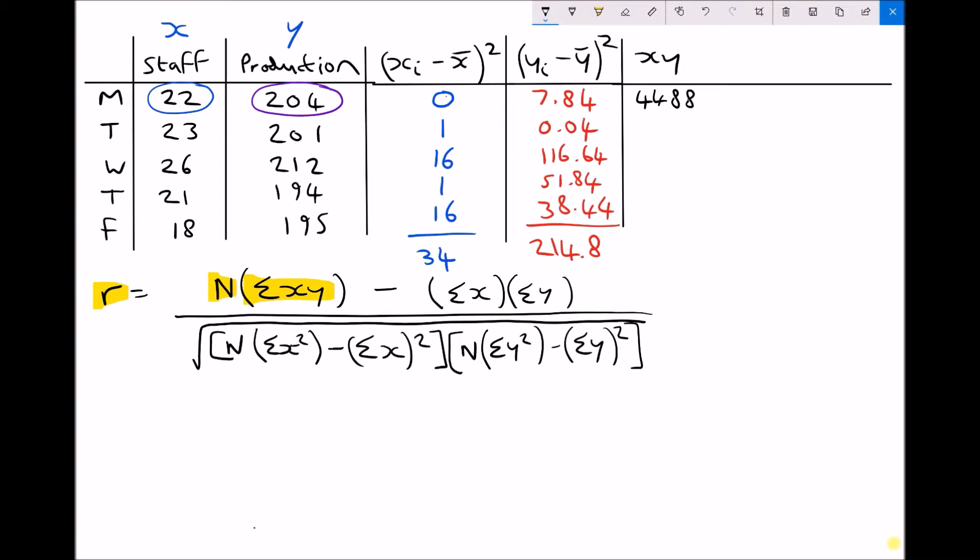Next we have 23 times 201 which is 4623. Next we have 26 times 212 which is 5512. Next we have 21 times 194 which is 4074. And finally we have 18 times 195 which is 3510. Now remember that what that highlighted term is asking us for is the sum of all of those added together, the sum of x, y. So let's add those up now. 4488 plus 4623 plus 5512 plus 4074 plus 3510 gives 22207.